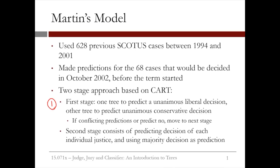The first stage involved making predictions using two CART trees: one to predict a unanimous liberal decision and one to predict a unanimous conservative decision. If the trees gave conflicting responses or both predicted no, they moved on to the next stage. About 50% of Supreme Court cases result in a unanimous decision, so this was a nice first step to detect the easier cases.